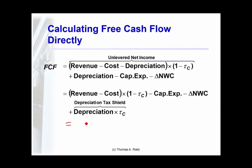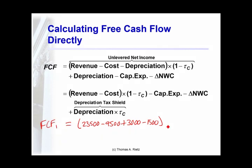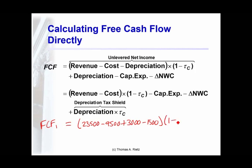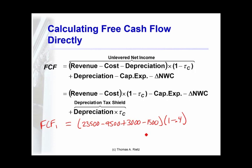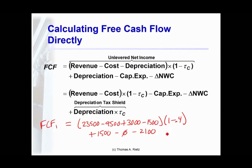For example: sales revenue net of cannibalization was $23,500; cost of goods sold net of cannibalization was $9,500; SG&A expenses including the opportunity cost of lost rent was $3,000; depreciation $1,500. Computing this in year one at a 40% tax rate, then adding back depreciation and subtracting capital expenditures — which are zero in year one — minus the change in working capital, gives us exactly $5,100.